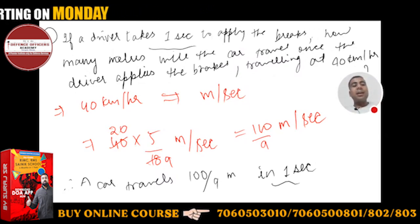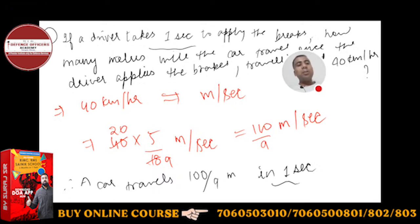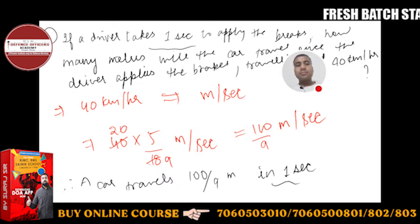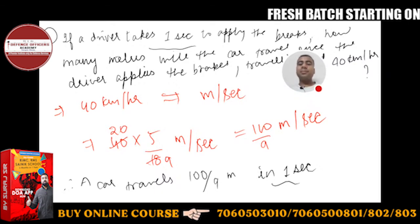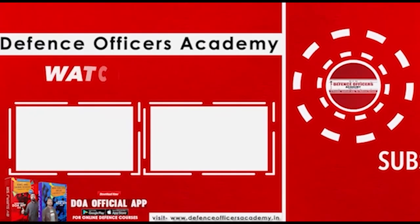One second इसलिए लिया क्योंकि driver को एक second लगता है। अगर 2 seconds पूछा होता तो into 2 करते — 200 by 9 meters आता। अगर 3 seconds पूछा होता तो into 3 कर लेते। Very easy!